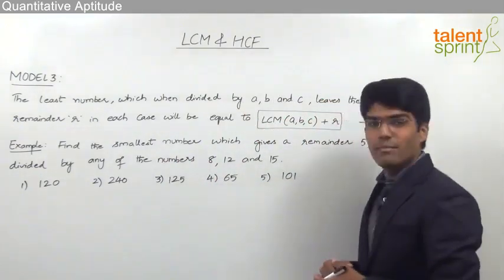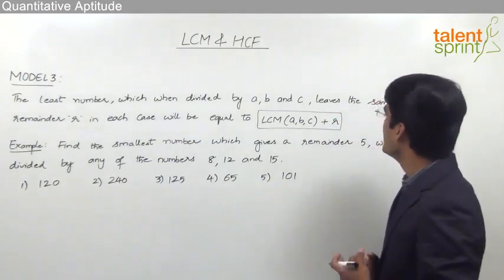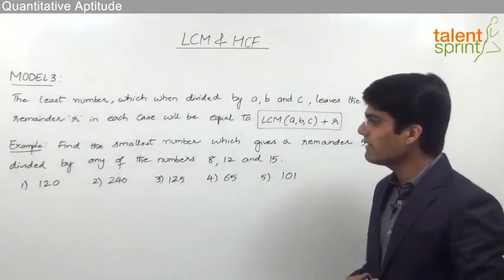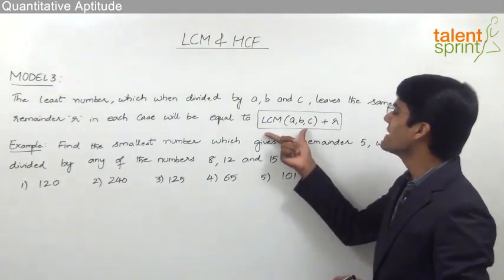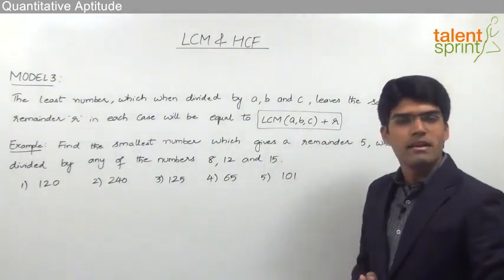The least number which when divided by A, B and C leaves the same remainder R in each case will be equal to the LCM of ABC plus the remainder R.